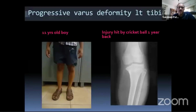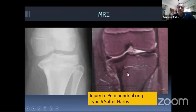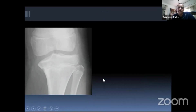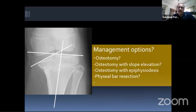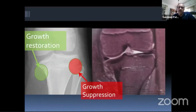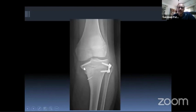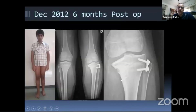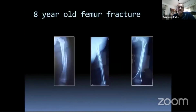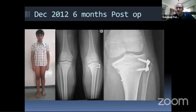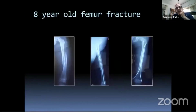This is a peripheral bar case. A child was hit by a cricket ball. MRI showed a peripheral tether — a Salter-Harris Type 6 injury. The bar was resected, a cement block was interposed, and growth modulation was added. X-rays showed the resection, monitoring pins, and a growth modulation device; over time the alignment slowly straightened to a very good correction.